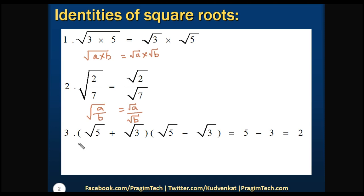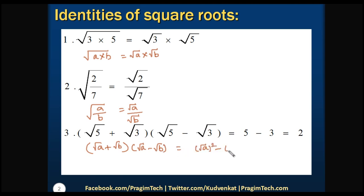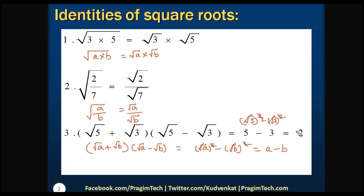Let us look into the third one. This is in the form of a plus b into a minus b. So the identity is: square root of a plus square root of b, into square root of a minus square root of b, equals square root of a squared minus square root of b squared. We can cancel out square and square root, so the resulting identity is a minus b. Applying this, square root of 5 squared minus square root of 3 squared gives us 5 minus 3, which is 2.